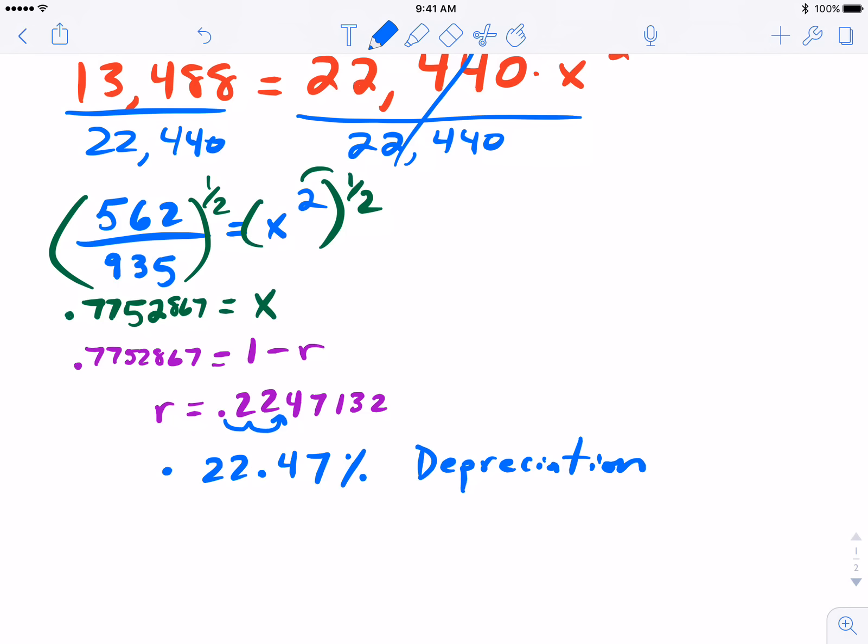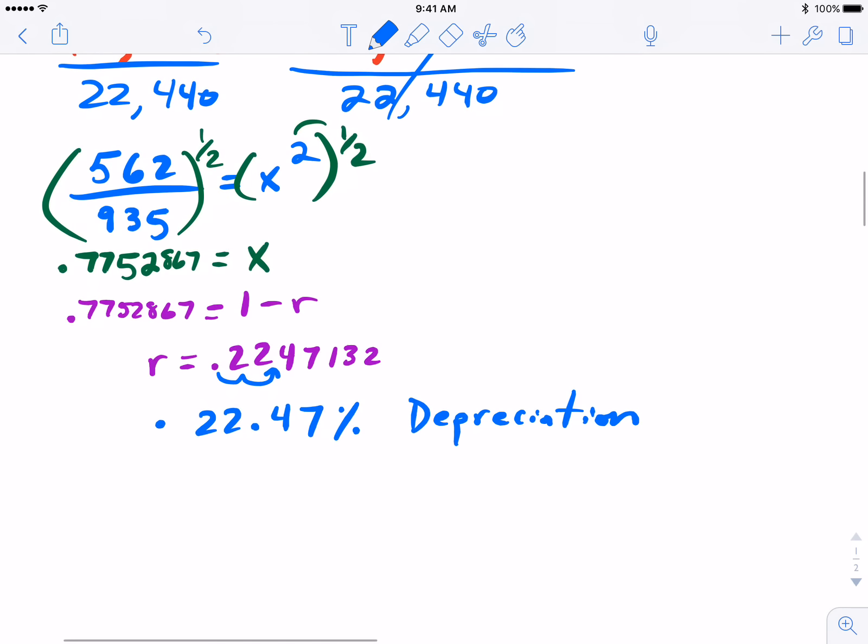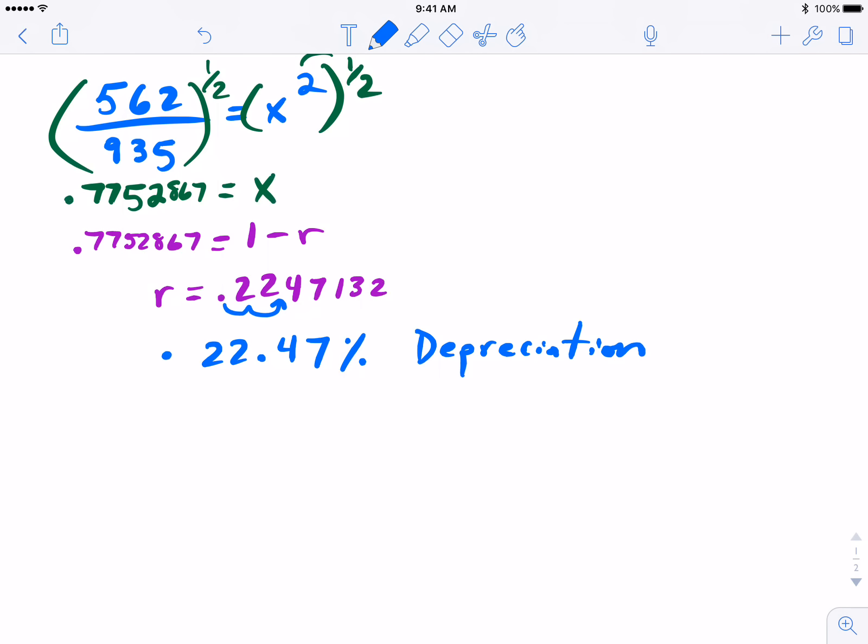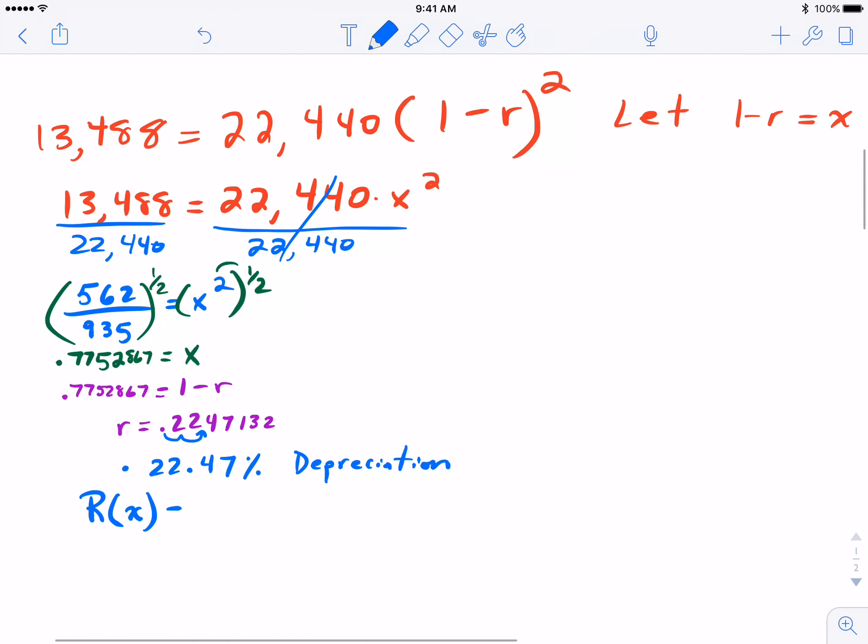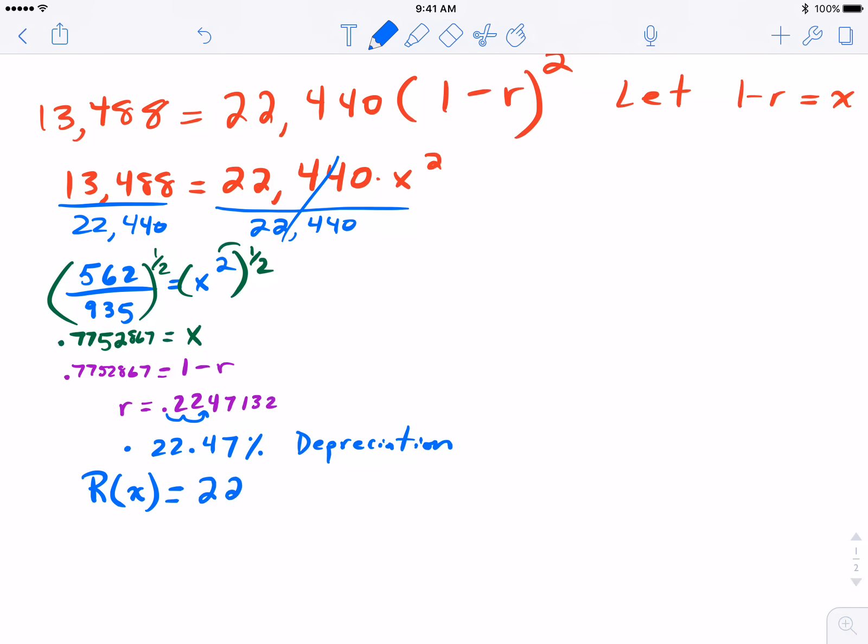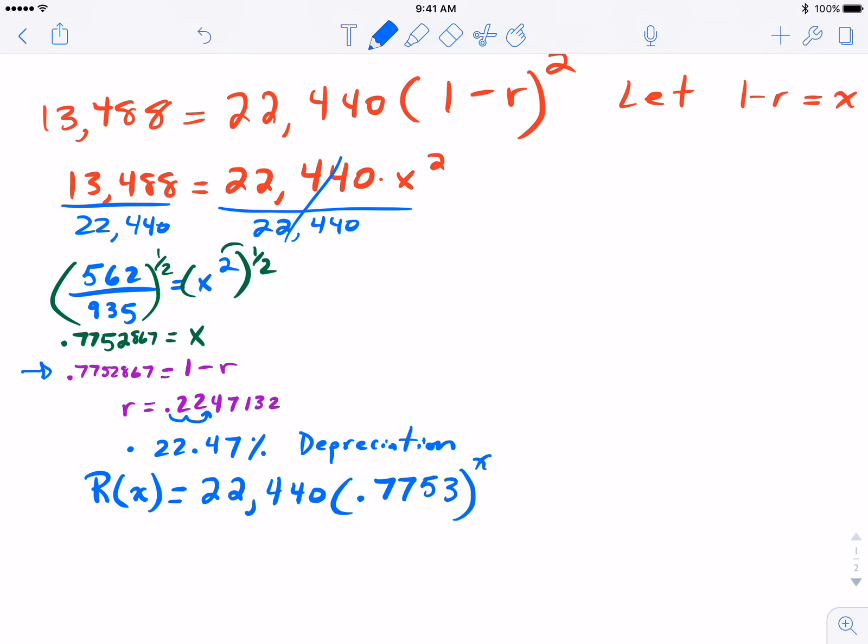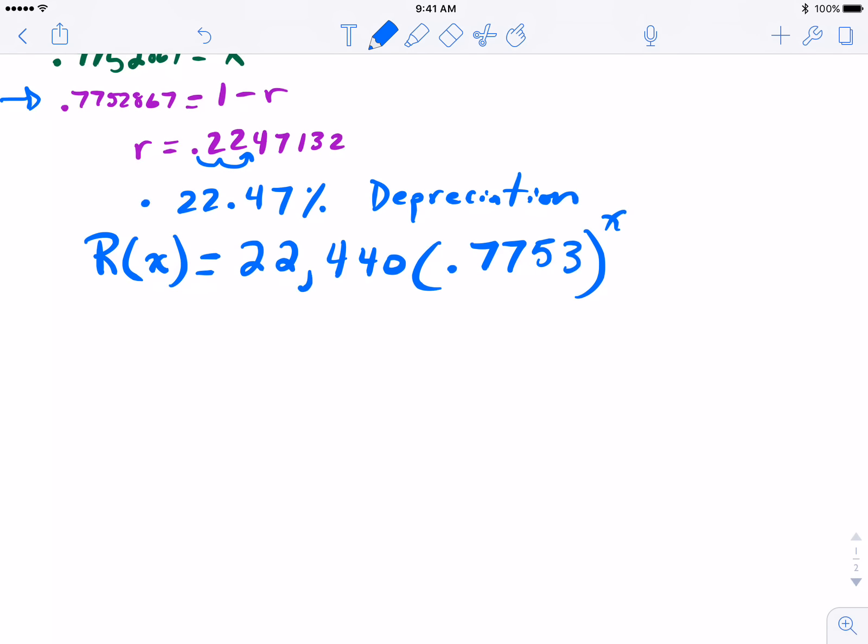So now that we have an actual rate, we've answered kind of part of the problem early on with your project, and now the second component is to actually put together a function. I'm going to call it r(x), it's going to look the exact same as what we kind of set up first. I have my initial amount, 22,440, and I can do 1 minus 0.22 or I could just simply leave it as our base, 0.7753, to the x power. So in other words using this function I can predict how much my car is going to be worth after three years, four years, five years and so on down the line.